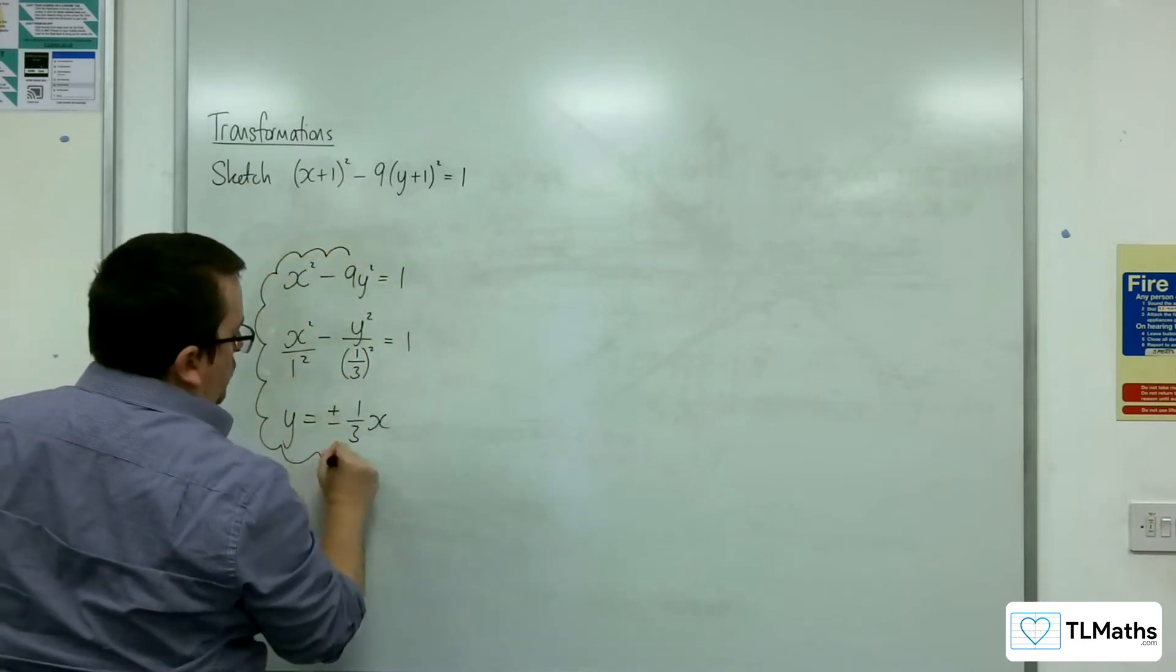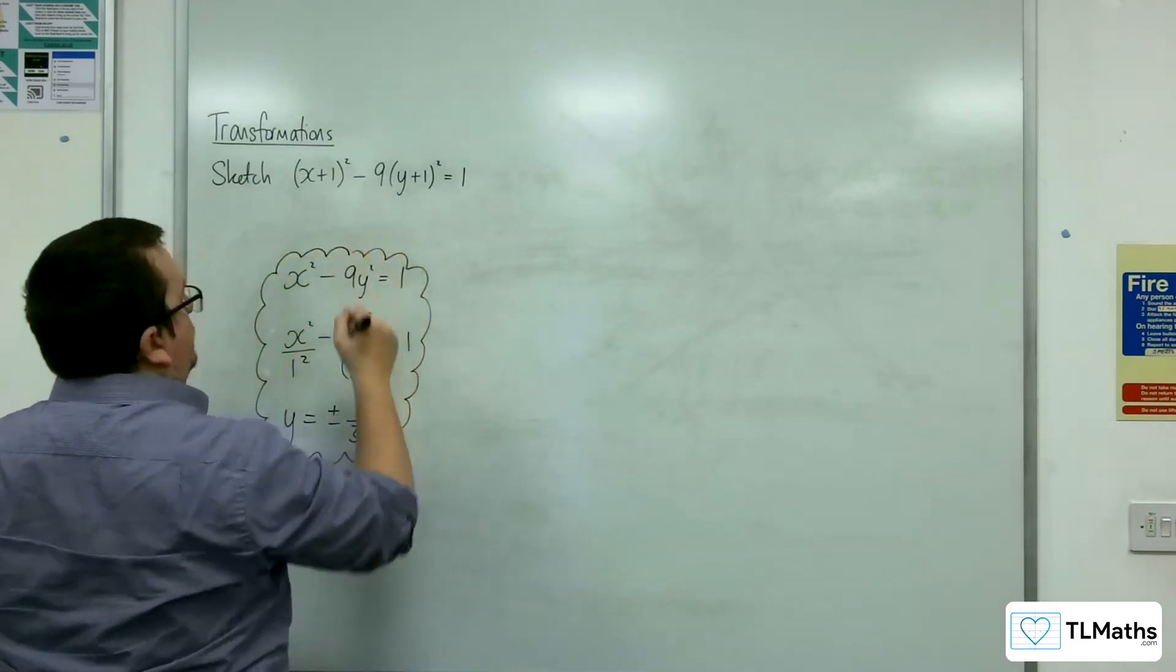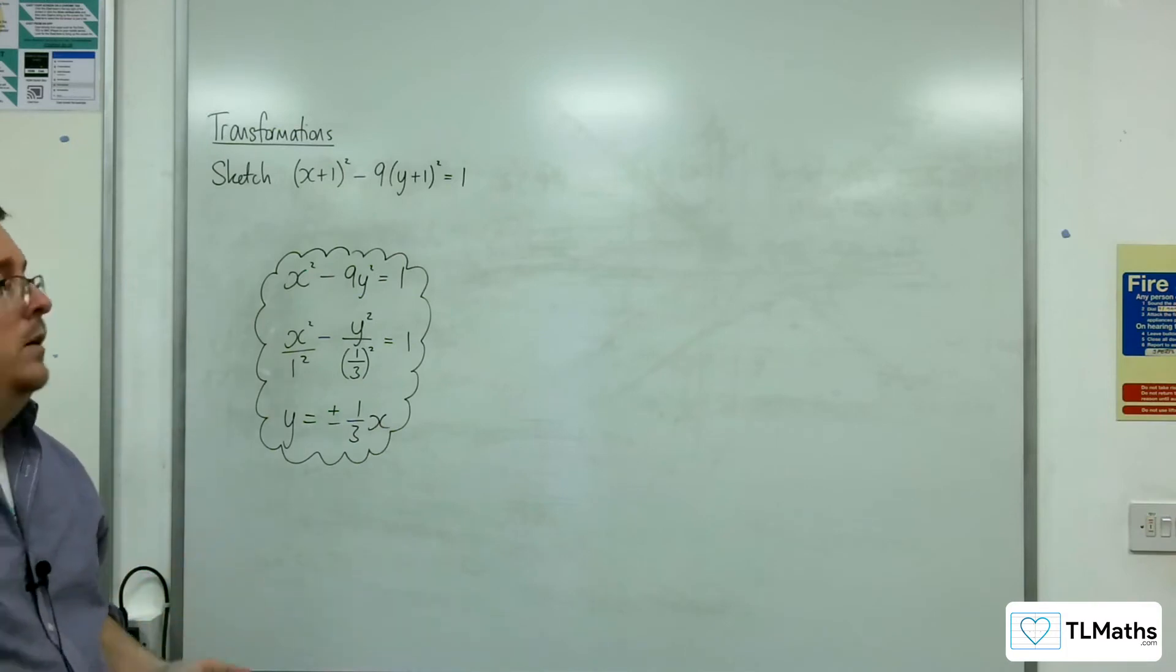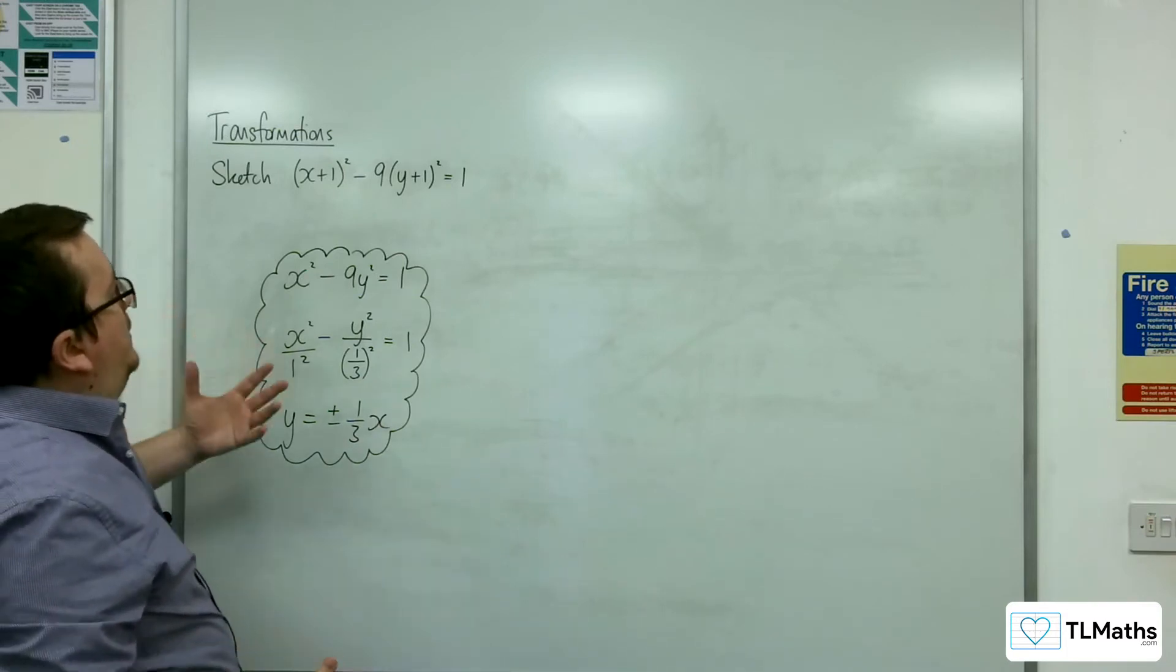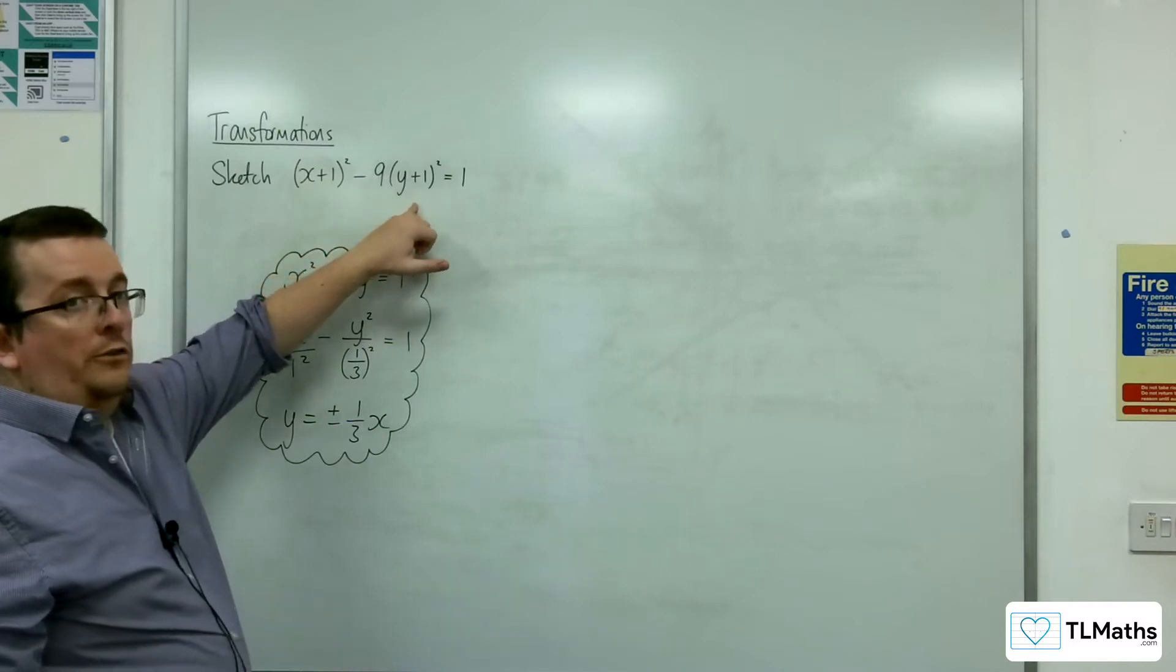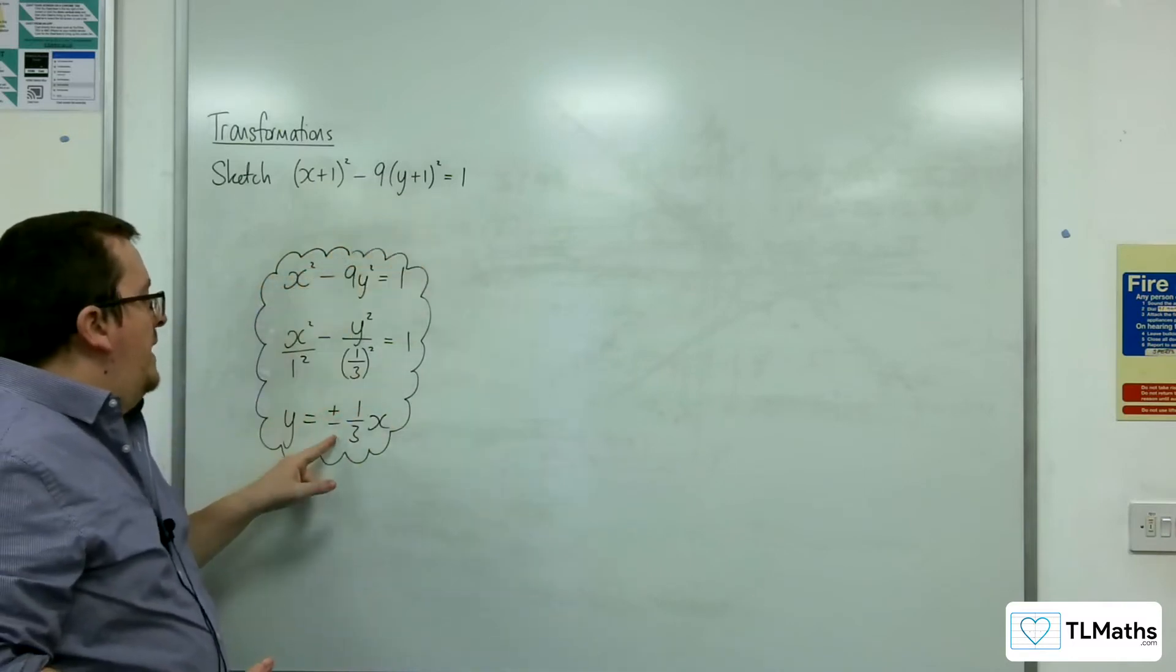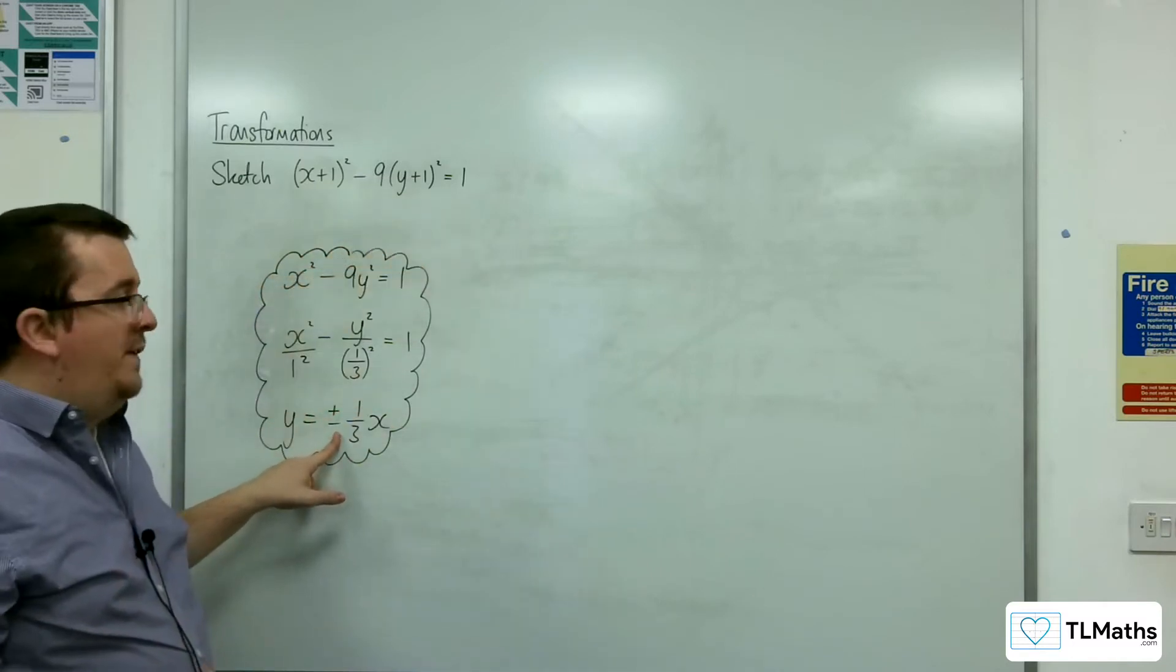So this is the original graph, and then the graph is translated by the vector (-1, -1). And so the asymptotes will also be affected by that.